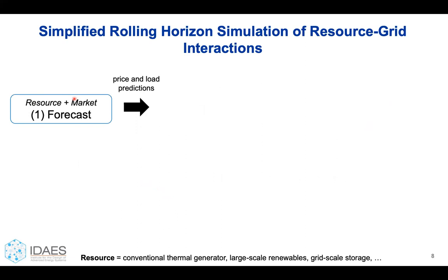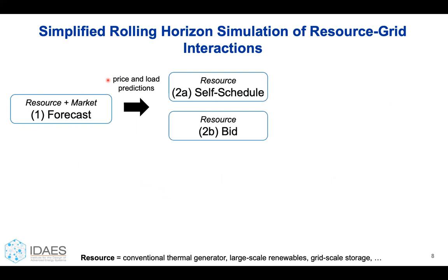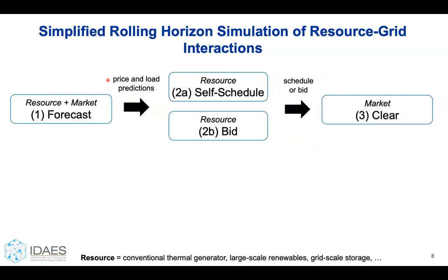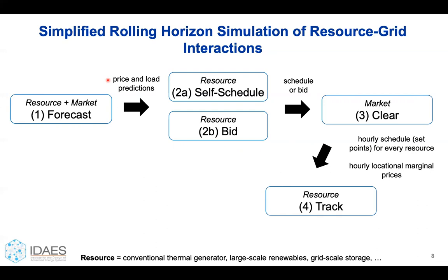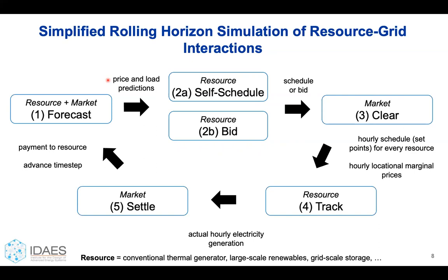It starts with a resource in the market making a forecast — forecasting the price in the market or the load. A resource then decides whether to self-schedule or bid. This results either in a schedule, where the resource specifies how much power to use every hour, or a bid, which contains cost information. The market then clears by taking all of these bids or self-schedules from every node and minimizing the overall system cost subject to constraints for individual resources and the transmission network. This gives hourly schedules and locational prices. Each resource then tracks their signal from the market, and actual plant outputs are observed, allowing for payment calculation.